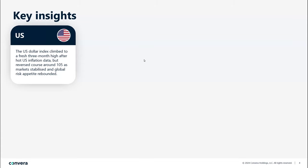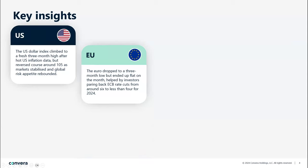Over in Europe, we still have some concerns around economic growth, especially Germany weighing down on the broader Eurozone economic outlook, and that's one main reason behind the euro's challenging start to this year. It did hit a three-month low against the US dollar but ended the month pretty much flat, helped by investors paring back expectations of ECB rate cuts from about six to less than four for 2024.